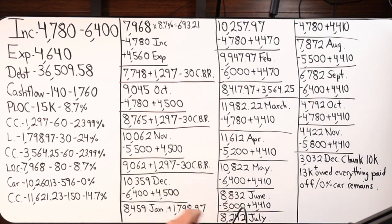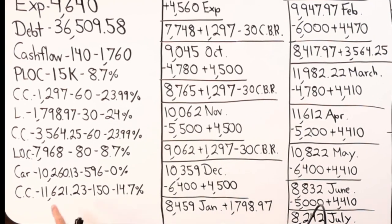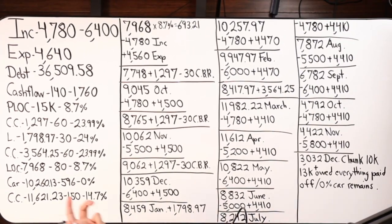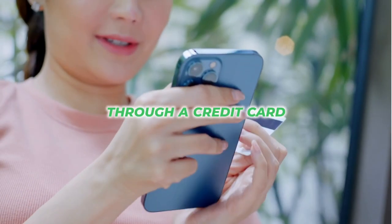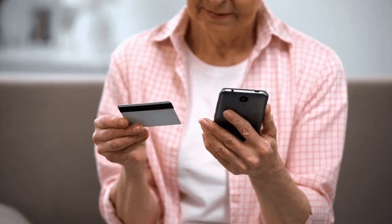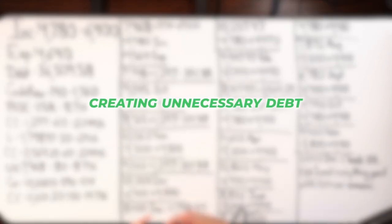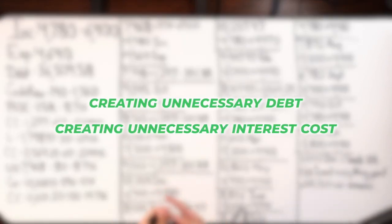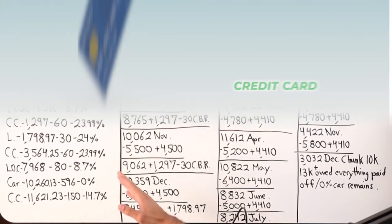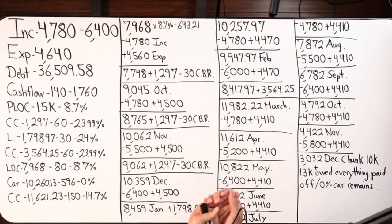Prior to becoming a coaching client, this person was using a credit card to run their bills. Typically I'm in favor of running bills through a credit card to earn cashback rewards — no issue with that. The problem is when you're running bills through a credit card with a pre-existing balance owed. In this situation they have an existing balance, and while they're using the card with the least interest at 14.7%, they're creating unnecessary debt and unnecessary interest costs.